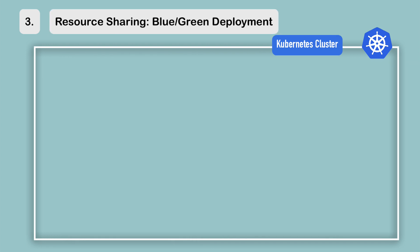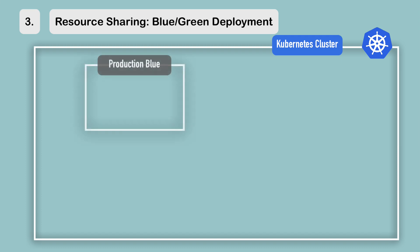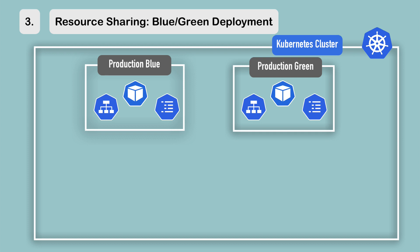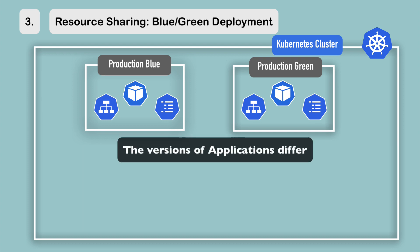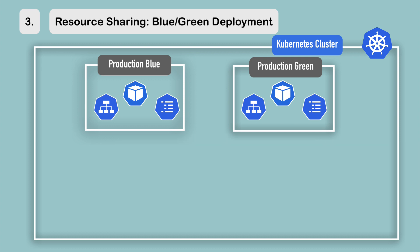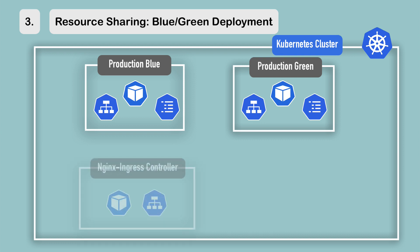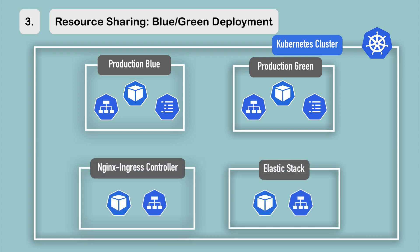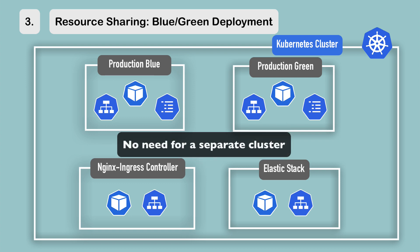Another use case is when you use blue-green deployment, which means in the same cluster you want to have two different versions of production — one that is active now and another that is going to be the next production version. The versions of applications in those blue and green production namespaces will be different. However, these namespaces might still need to use the same shared resources like Nginx controller or Elasticsearch, so they can both use them without setting up a separate cluster.